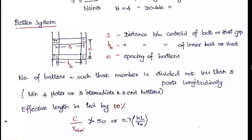In the batten system, straight plates are used to connect two vertical members horizontally. A group of bolts is used at each connection point. The spacing s is the distance between the centroids of the bolt/rivet groups. lb is the distance between inner bolts (closer to the end), and c is the spacing between one batten and the next.